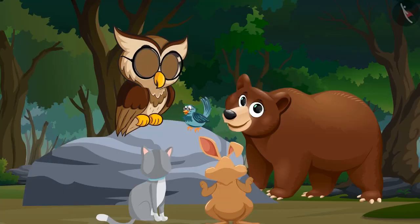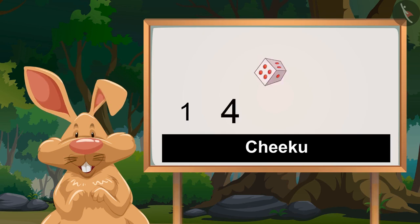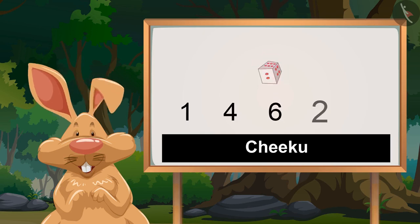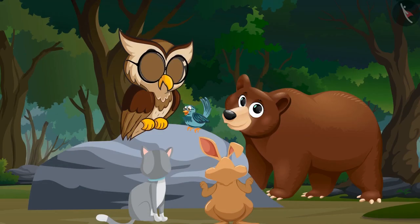Okay, I will roll first. One, four, six, two, two. So Chiku got these numbers on the dice.